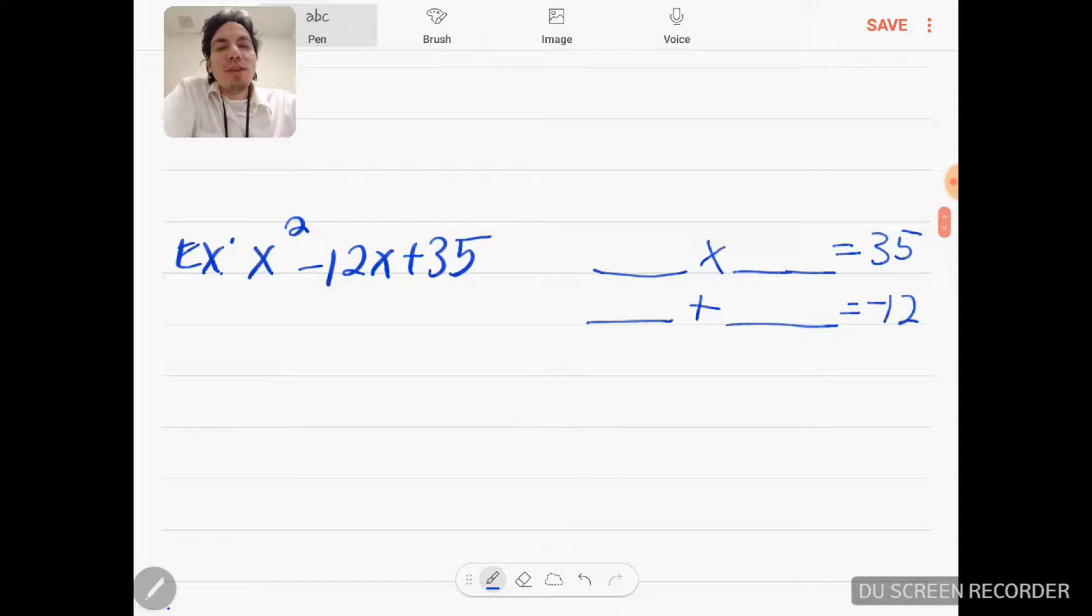All right, next one as well. What are the two factors that give me 35? Well, that's 5 times 7. 5 times 7 would be 35, but when I add them I would get negative 12. Hmm, that doesn't sound right.